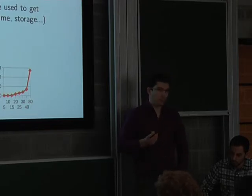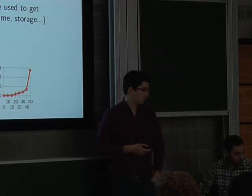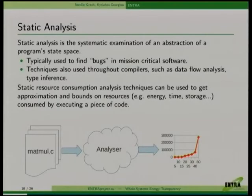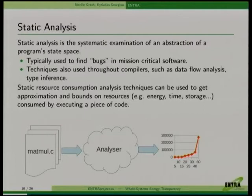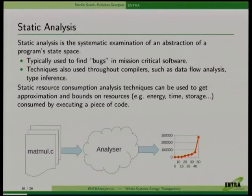A particular branch in static analysis deals with static resource consumption analysis. These techniques can be used to infer how much resources are consumed by executing a program - for instance, how much energy, time, or storage a piece of code will require. The idea is that you start with a static C source file, build this static resource consumption analyzer, and it tells you how much energy or time is required to execute a particular function, parameterized to an input argument or any other argument such as a global variable.